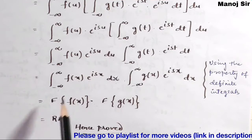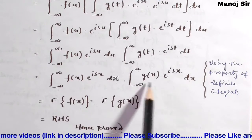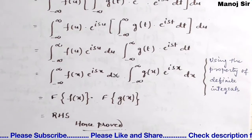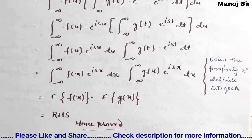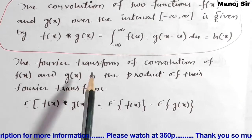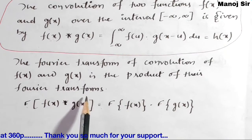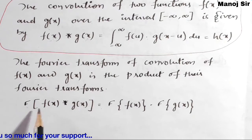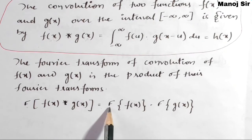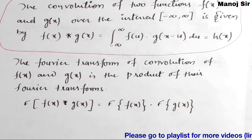The first integral is the Fourier transform of f(x), and the second integral is the Fourier transform of g(x). Hence proved. This is the right hand side. Finally, we have proved that the Fourier transform of the convolution of f(x) and g(x) equals the Fourier transform of f(x) into the Fourier transform of g(x). Thank you so much.